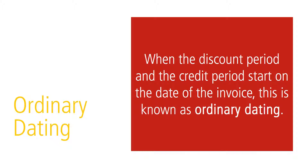Finally, when the discount period and the credit period start on the same date as the invoice, this is known as ordinary dating — the most common method of dating in terms of sale. The last day to take the cash discount, the discount date, is found by adding the number of days in the discount period to the invoice date. For example, an invoice dated November 8th with terms 2/10 N30 must be paid no later than November 18th to receive the cash discount. The net date is December 8th. If the buyer does not pay by the net date, the seller may impose a penalty charge for late payment.